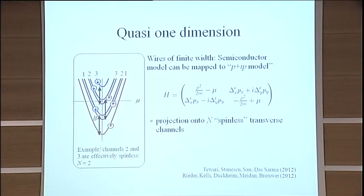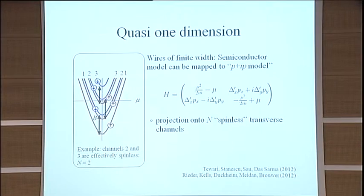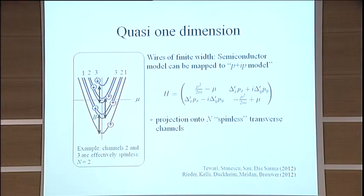And what this means is, I think, best illustrated in an example where I've shown the dispersions for three transverse channels. There's the Zeeman splitting so that the spin-up channel, the majority channel, has a lower energy than the spin-down channel. But if you look at it, the lowest transverse channel, both spin-up and spin-down are below the Fermi level. So this is not a spinless channel. This is a spin-full channel, and it won't give you a spinless p-wave superconductor.